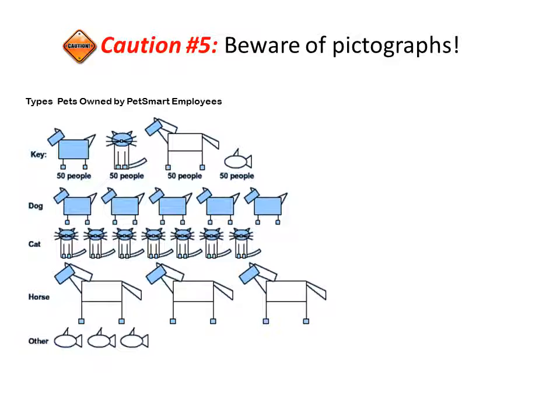Finally, we want to be aware of pictographs. A pictograph is a picture used to represent a certain number of individuals. For example, this graph shows the types of pets owned by PetSmart employees. The key shows that one dog represents fifty people, one cat represents fifty people, one horse represents fifty people, and one fish represents fifty people.